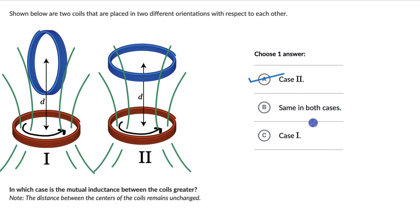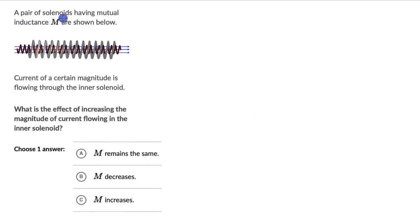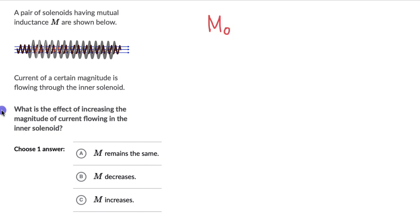Let's look at one more question. For this one, we have a pair of solenoids which have a mutual inductance M. A current of a certain magnitude is flowing through the inner solenoid. What is the effect of increasing the magnitude of that current? We can think about the mutual inductance of the outer solenoid with respect to the inner one, or the mutual inductance of the inner with respect to the outer — the good thing is these two are equal to each other.